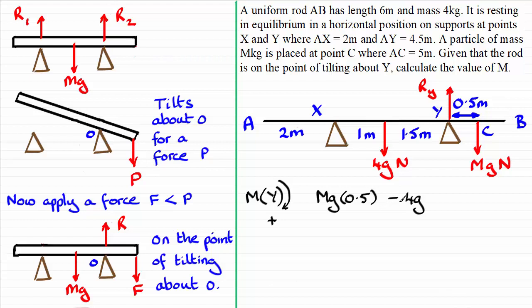OK, it'll be negative. And multiply it by the distance back to Y, which is 1.5. And because this is in equilibrium, there'll be no overall moment. So it'll equal 0.